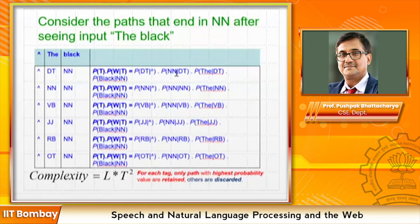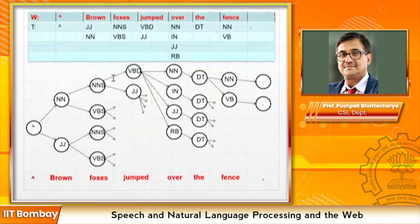All these probabilities are already obtained from the corpus as available parameters, and cumulative probability values are recorded for each path. The computation proceeds applying the Markov assumption. The same process applies to any sentence like 'brown foxes jumped over the fence', as long as this theory and algorithm are understood.